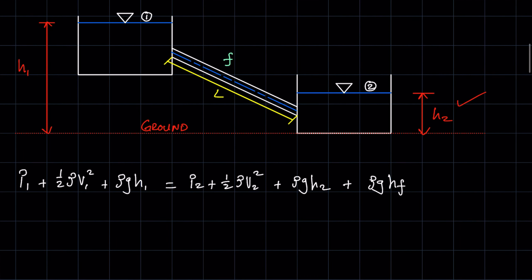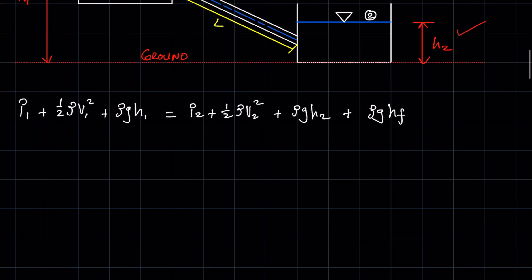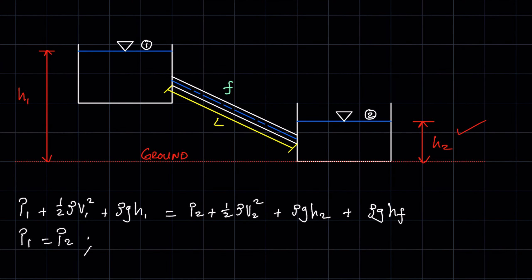Since p1 and p2 are both atmospheric, their gauge pressures are equal to zero, so they cancel each other out. As for velocity, the velocity of the water in the reservoir is essentially negligible, so we take it as zero. We cannot easily determine the instantaneous velocity in the reservoir — the water moves so slowly between the two reservoirs that kinetic energy change is negligible.